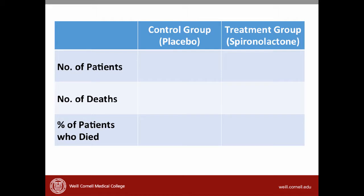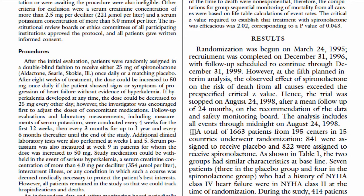To help us organize our thinking, I've made a table. The columns are the control and treatment groups, and the rows are the outcomes in each group. If we go to the results section in the article, we can see that 1,663 patients were randomized: 841 patients assigned to the placebo group and 822 patients assigned to the spironolactone treatment group. The authors describe patients who dropped out, but they used an intention-to-treat analysis, so anyone randomized to the control group is analyzed as a control patient, and anyone randomized to the treatment group is analyzed as a treatment patient.